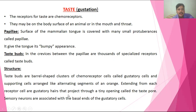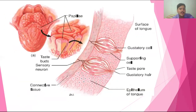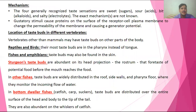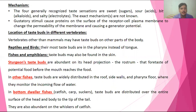Extended from each receptor cell are the gustatory hairs. Sensory neurons surround the gustatory cells, receive the message, and convey the taste sensation. There are four generally recognised taste sensations: sweet (sugars), sour (acids), bitter (alkaline substances), and salty (electrolytes). These receptors sense each of those four flavours.